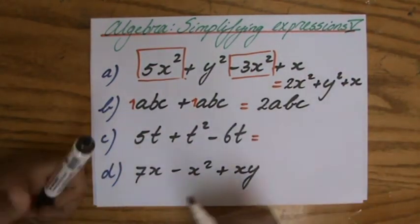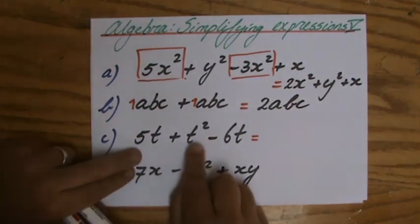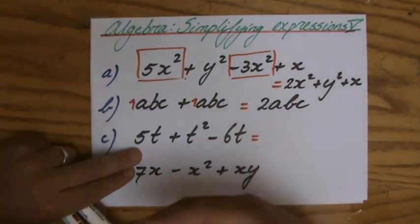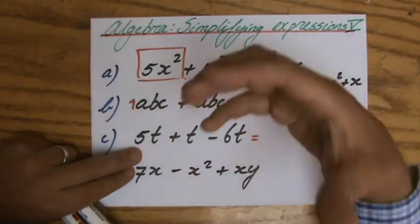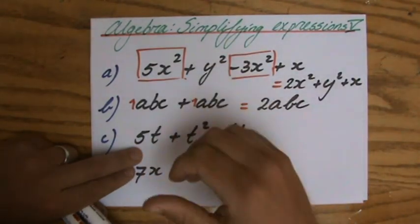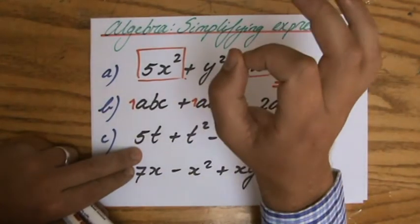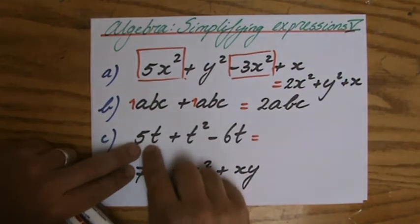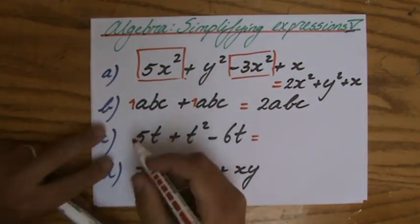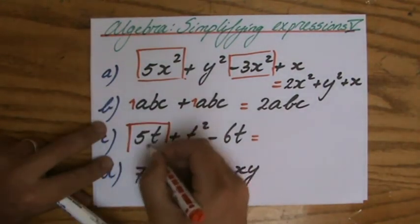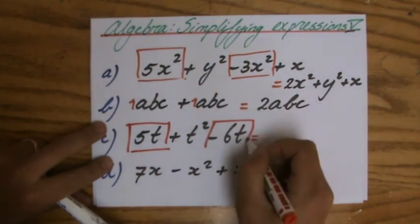Question c: 5t plus t² minus 6t. Simplify the expression, meaning combine the like terms—terms with the same combination of variables. t and t² are unlike. I need another term with t, which I have over there. So if I box it, I have 5t take away 6t.